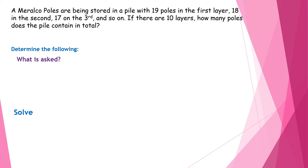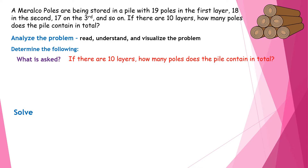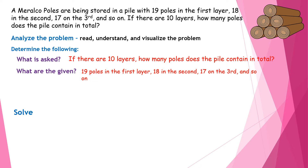Let's have another problem. A pile of poles are being stored with 19 poles in the first layer, 18 in the second, 17 in the third, and so on. If there are 10 layers, how many poles does the pile contain in total? First we analyze the problem — read, understand, and visualize. We're asked to find the total number of poles across 10 layers. The given values are 19 in the first layer, 18 in the second, 17 in the third, and so on.